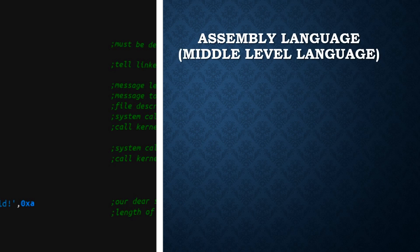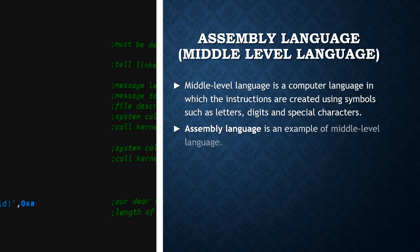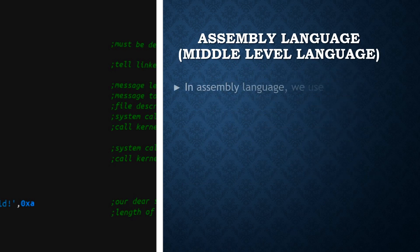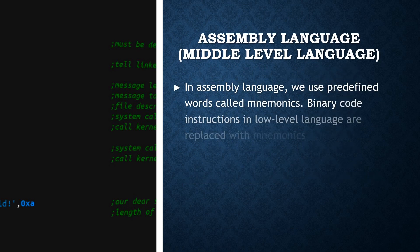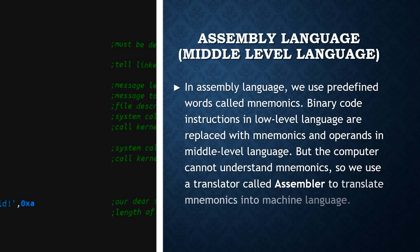Assembly language, or middle-level language, is a computer language in which the instructions are created using symbols such as letters, digits, and special characters. In assembly language, we use predefined words called mnemonics. Binary code instructions in low-level language are replaced with mnemonics and operands in the middle-level language. Since the computer cannot understand mnemonics, we use a translator called an assembler to translate mnemonics into machine language.